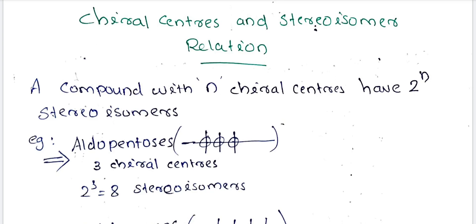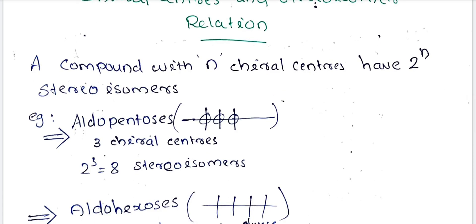Now consider aldopentose, which has an aldehyde group. Aldopentose is an aldopentose — how many carbons are there? There are 5 carbons, hence the prefix 'pent'. We have 3 chiral carbons. How many stereoisomers are there? 2 raised to 3 equals 8 stereoisomers.